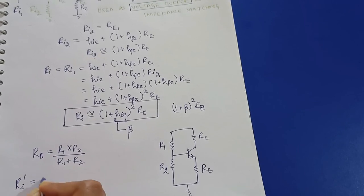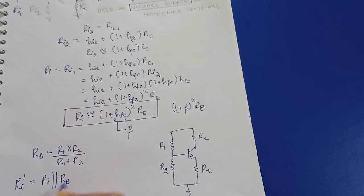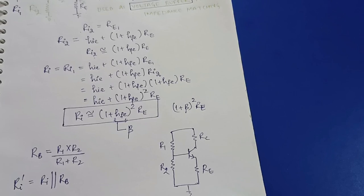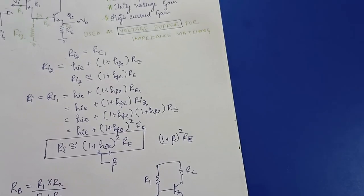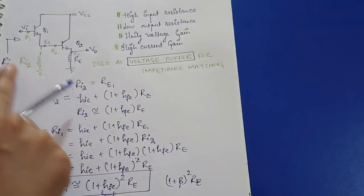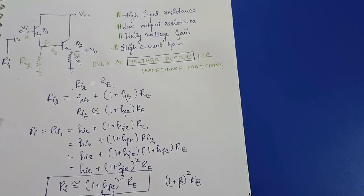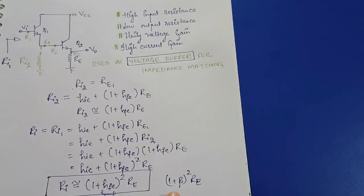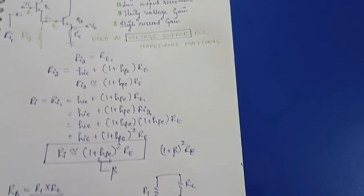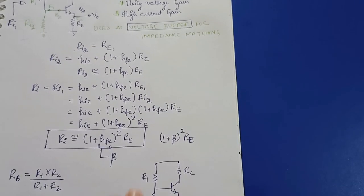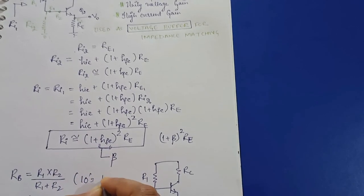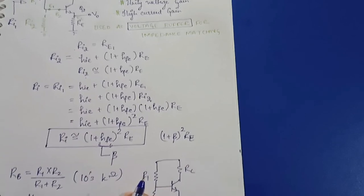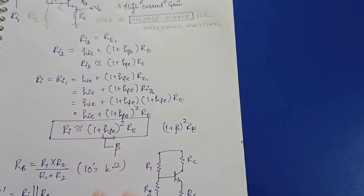In that case we get the overall input resistance as ri parallel to RB. Here ri is the input resistance of the Darlington amplifier — which is (1 + β)² × RE and is in megaohms — and RB is R1 parallel R2, which is in hundreds to thousands of kilohms. So ri is in megaohms while RB is in kilohms.